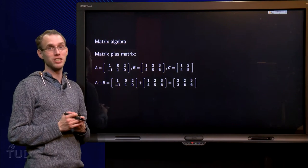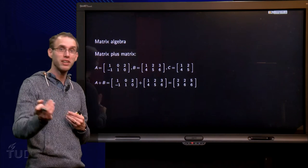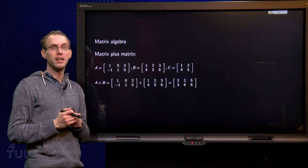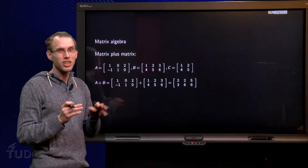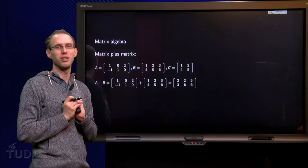So adding two matrices goes similar as adding two vectors, multiplying a matrix with a scalar too. There is a small catch however, as you will see shortly.